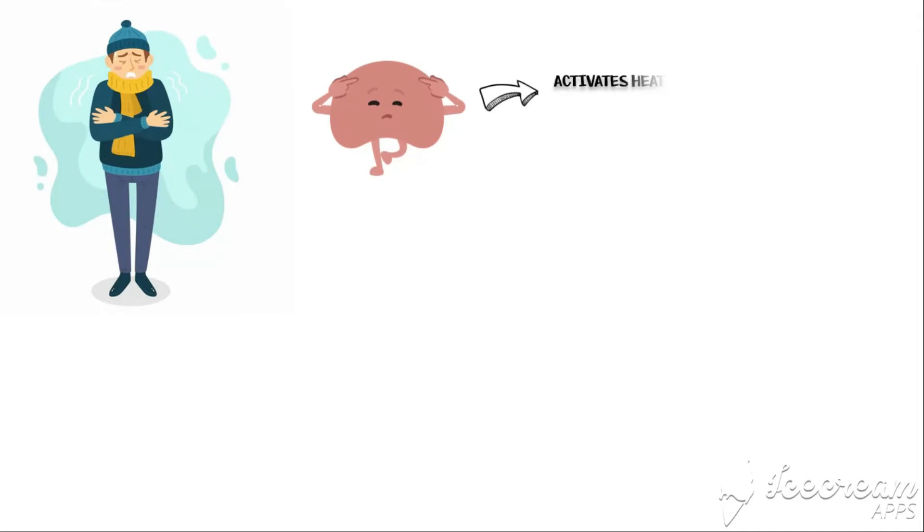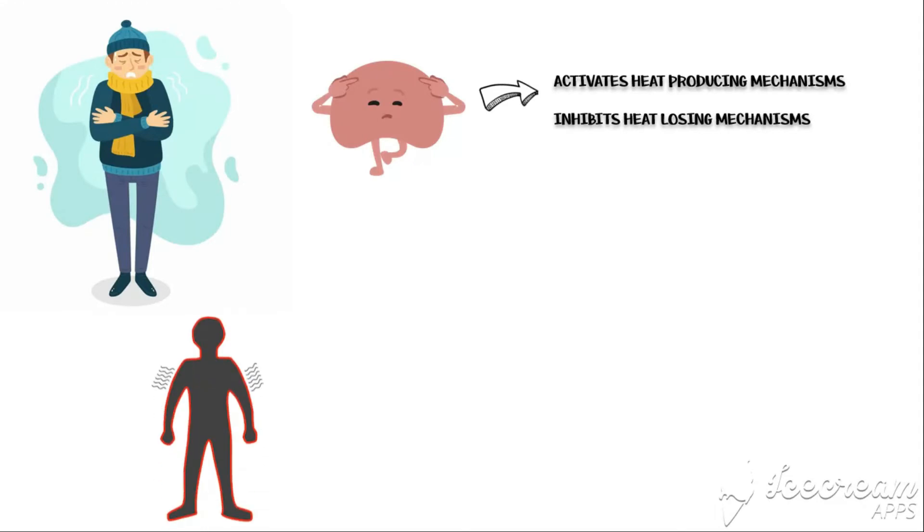Similarly, when body temperature is reduced, the hypothalamus activates heat producing mechanisms and inhibits heat losing mechanisms. So the blood supply to the skin will be reduced and hair follicles straightened. This is called piloerection. This will create a static air flow over the skin, so that the heat loss through convection will be reduced.